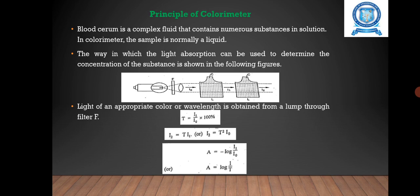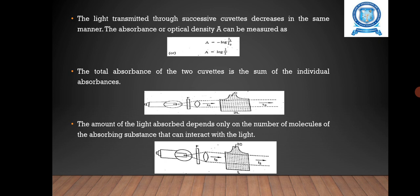The light transmitted through successive cavities decreases in the same manner. The absorbance or optical density A can be expressed as A = log(1/T). The total absorbance of the two cavities is the sum of the individual absorbances. The amount of light absorbed depends only on the number of molecules of the absorbing substances that can interact with the light.